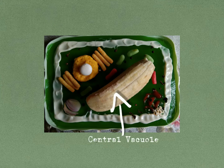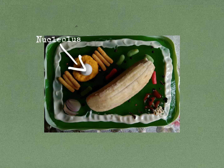The role of the central vacuole is to maintain the pressure against the inside of the cell wall, giving the cell shape and helping to support the plant. The nucleolus is a region found within the cell nucleus that is concerned with producing and assembling the cell's ribosomes.